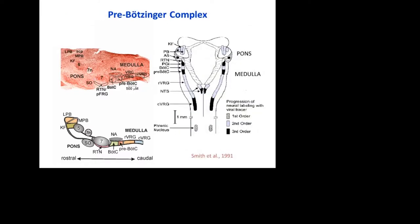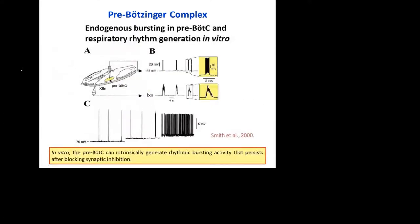Among other structures of the ventral respiratory column, there is a very special compartment identified by Jeff Smith. He named this structure the pre-Bötzinger complex. What is special about this pre-Bötzinger complex: if a slice containing this structure is prepared in vitro, it is capable of generating an endogenous rhythm.